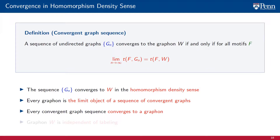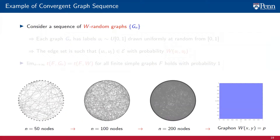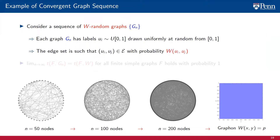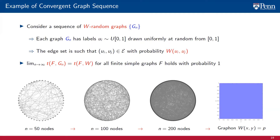The complementary observation — that every convergent graph sequence converges to a graphon — is also true. Moreover, the graphon W is independent of the label. As an example, consider a sequence of random graphs Gn drawn from the graphon W as shown on the bottom of the slide. Each graph Gn has labels ui drawn uniformly at random from the unit interval, and nodes ui and uj are connected with probability W(ui, uj). It can be shown that this graph sequence converges to the graphon in the homomorphism density sense with probability 1, and this almost sure convergence holds for all graphons.